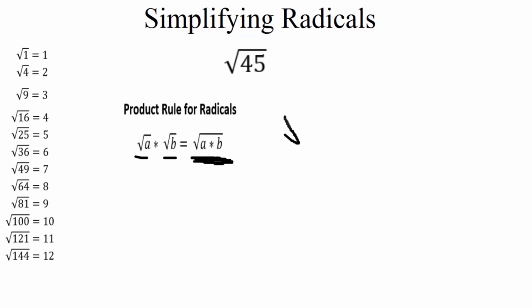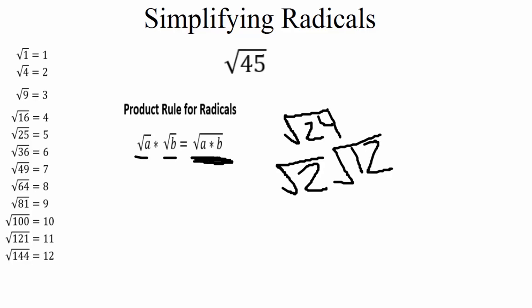For example, let's use the square root of 24. The product rule says that we can break that up into a factored form of that number. Since 24 is 4 times 6, or 2 times 12, I can break up that 24 into the square root of 2 times the square root of 12, since 2 times 12 is 24. Or I could break it up into the square root of 4 times the square root of 6.